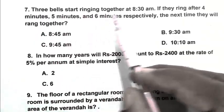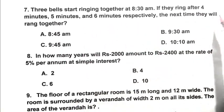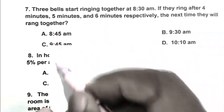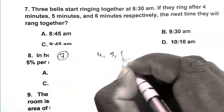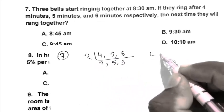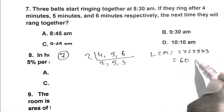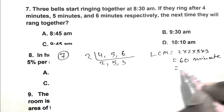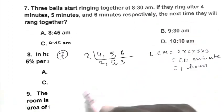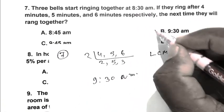Question number 7. Three bells start ringing together at 8:30 am. If they ring after 4 minutes, 5 minutes and 6 minutes respectively, the next time they will ring together? So friend, first we take LCM of 4, 5 and 6 minutes. LCM is 2 multiplied by 2 multiplied by 5 multiplied by 3. That is 60 minutes. That is 1 hour. So we have to add 1 hour with 8:30 am. So it becomes 9:30 am. So B is the right answer.